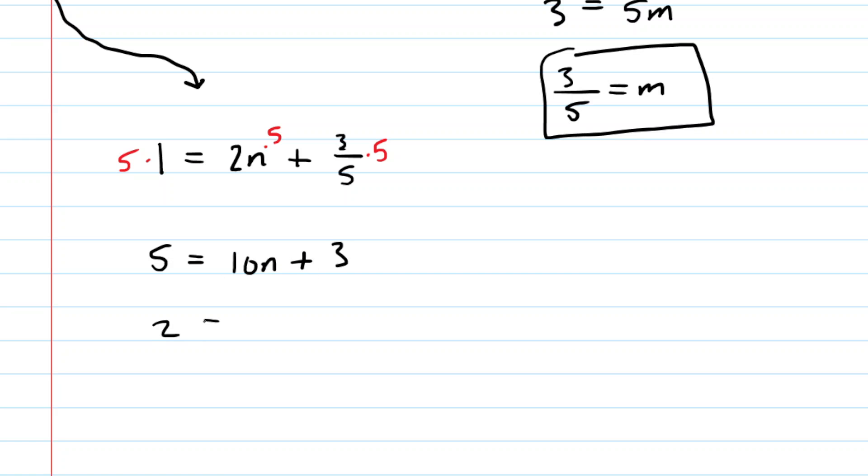Subtract 3 from both sides. You get 2 is equal to 10n. Divide both sides by 10. You get 2 divided by 10 is equal to n. We can simplify the 2 tenths by reducing it. Divide top and bottom by 2. We get n is equal to 1 fifth. And there are the correct answers to the question.